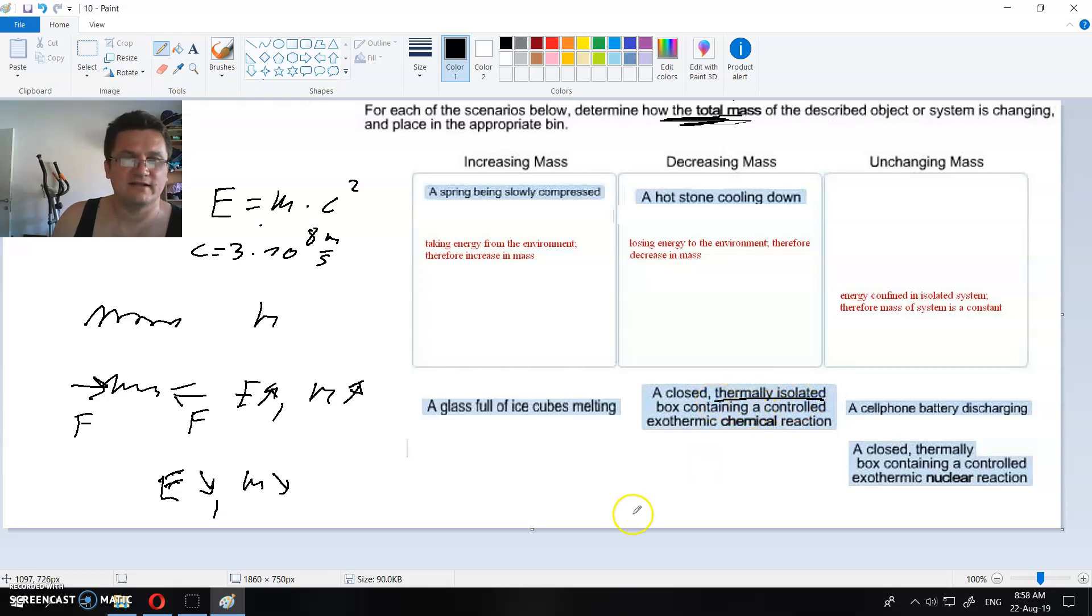But look at this: thermally isolated. Thermally isolated, that means all energy is inside the box. There is nothing lost or gained from the environment or nothing is lost to environment or gained from the environment. So that means that energy inside that thermally isolated box is constant.